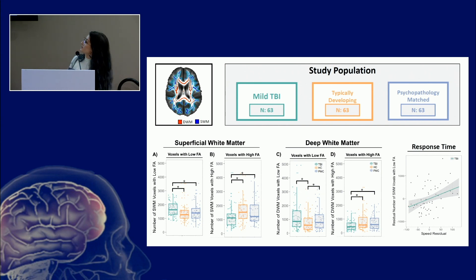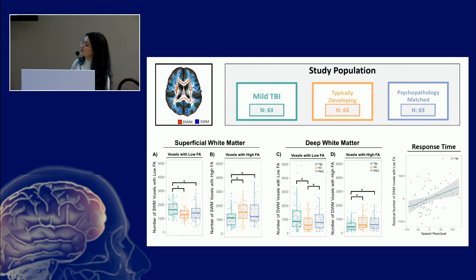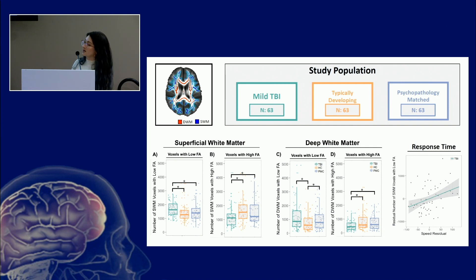Our score looked at abnormalities in FA, or fractional anisotropy. We saw what you might expect — in our TBI group we have more voxels with low FA, so more tissue abnormality. And the same when we look at voxels with high FA. You can come to my poster for more details on this, and the same pattern holds in the deep white matter.